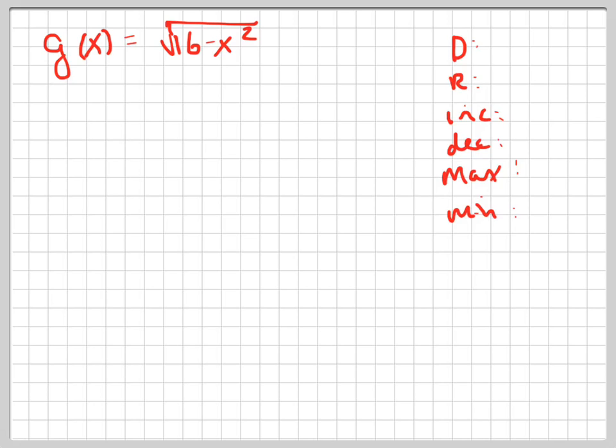First of all, the domain is the simplest thing to do because the domain is simply taking the inside, because it's a square root, and what does that square root have to be? Greater than or equal to zero. So solve that equation.